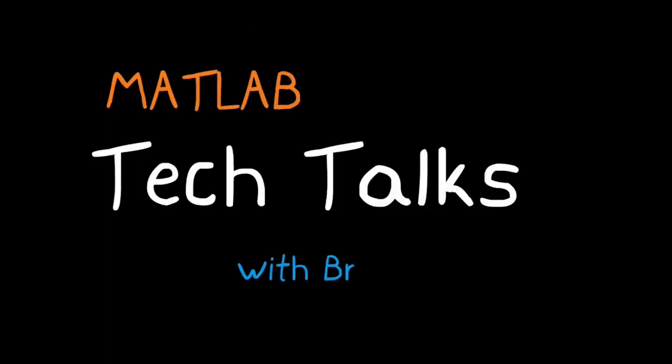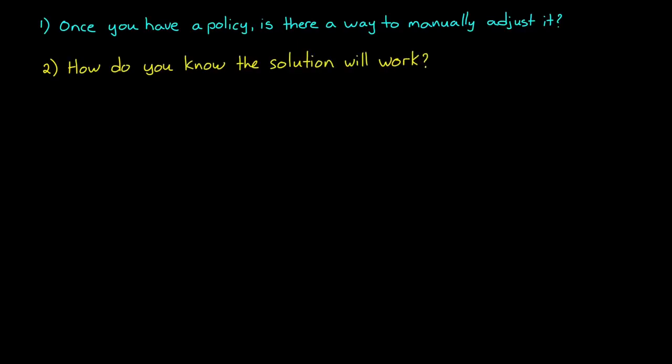I'm Brian and welcome to a MATLAB Tech Talk. The problems that we'll address in this video come down to two main questions. The first is, once you have a learned policy, is there a way to manually adjust it if it's not quite perfect? And the second is, how do you know the solution is going to work in the first place?